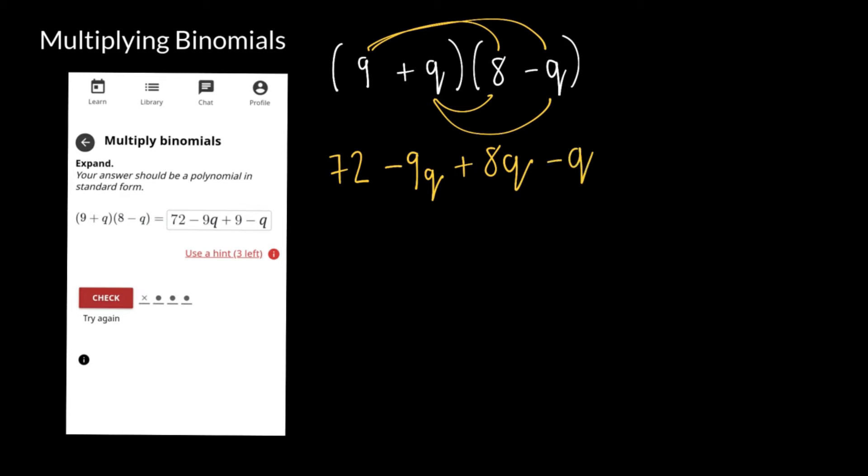So now we have all of this, we have to add like terms. Now I've got q there and q there, I have to add those two. So negative 9q plus 8q is going to give me negative q. There are two ways I can write this answer. I can either write 72 minus q minus q squared.